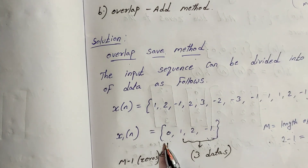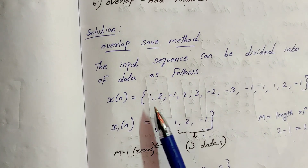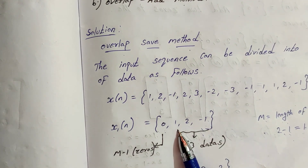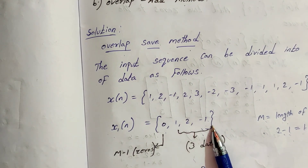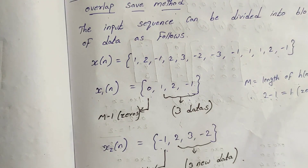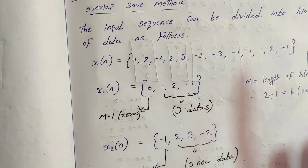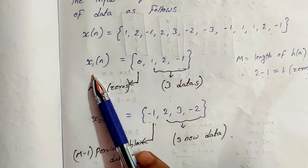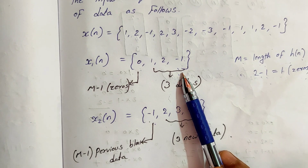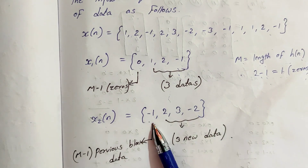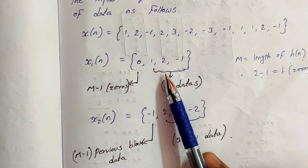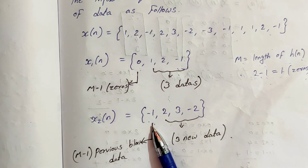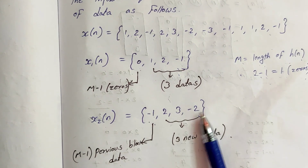x1[n] is equal to {1, 0, 1, 2, -1} — we add three new data values. x2[n] takes the last M minus 1 value from x1[n], which is -1, then adds the next three values: {-1, 2, 3, -2}.